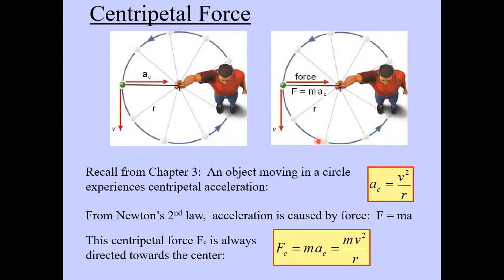There's always something making the object travel in a circle. In this case, it's tension. We'll see later on in the course where we will consider gravity to be the centripetal force that keeps the planets in orbit around the sun.